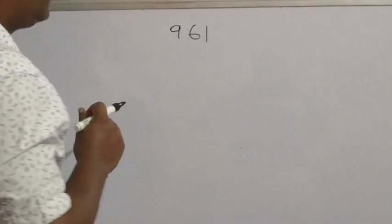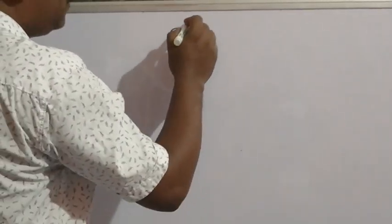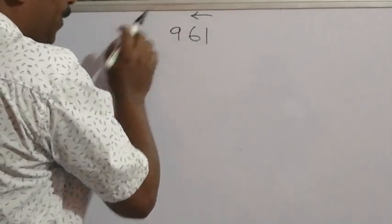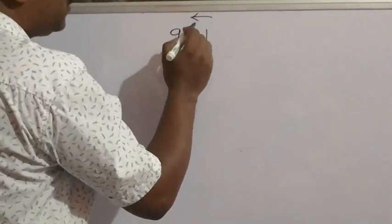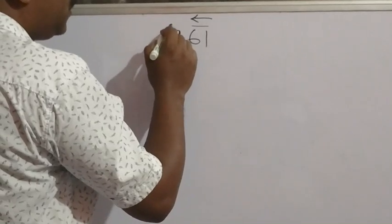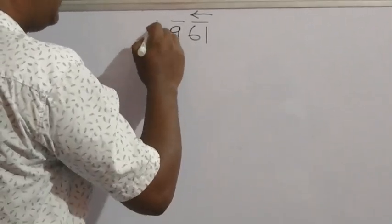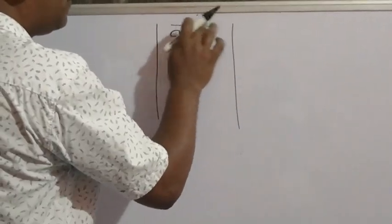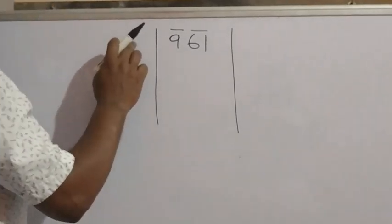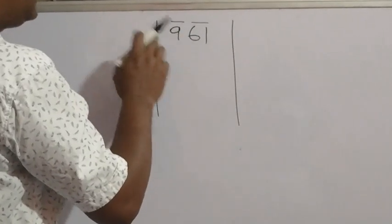In the long division method, first we have to make pairs. How to make pairs? From the right side to the left side, take 2 digits at a time. So 61 is one pair. What is left? Only 9 is left, so that single number is also one pair. Now we have to divide first with 9. We have to take the number whose square is equal to 9 or less than 9.